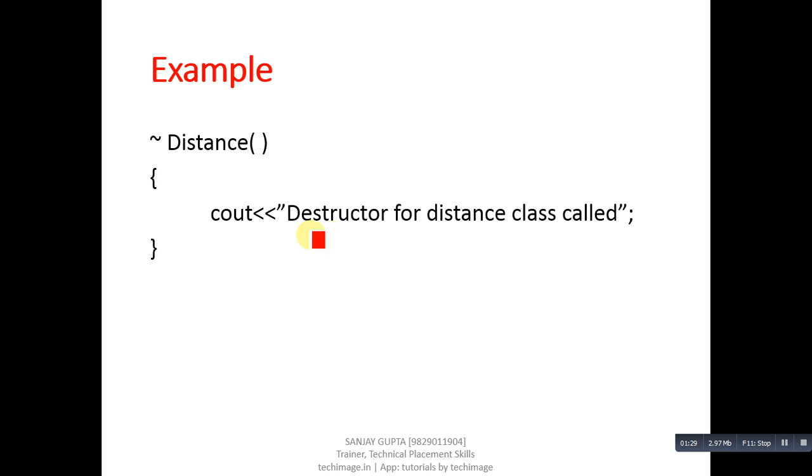This is an example of destructor. Suppose name of class is Distance. So name of destructor will be Distance. Then tilde sign you have to use, arguments you can't pass. And then a statement cout destructor for distance class called is written here.